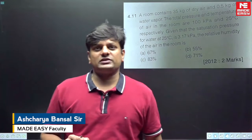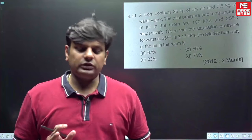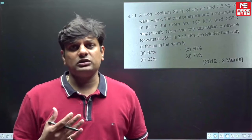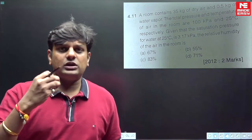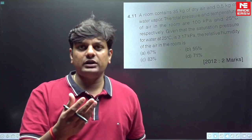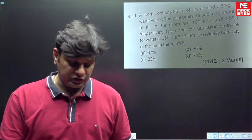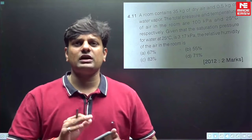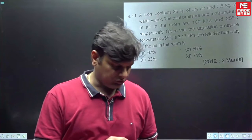Hello everyone. Today I will discuss a question based on RAC (Refrigeration and Air Conditioning), specifically the psychrometric chart concept. This is a most important concept from a GATE exam point of view because almost every year you will get a question based on the psychrometric chart — they will give you specific humidity and ask relative humidity, or give percentage humidity (degree of saturation, μ = ω/ωs) and ask other values. These types of questions have been asked for the last 15-20 years.